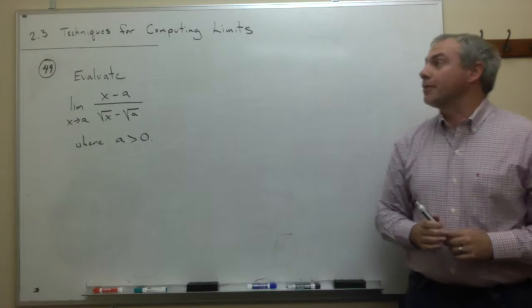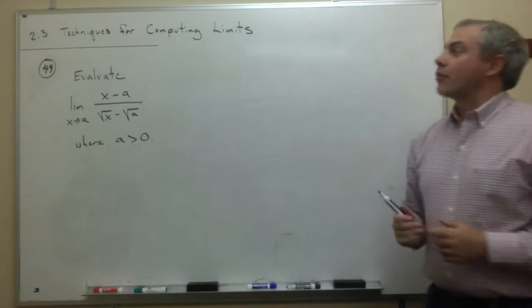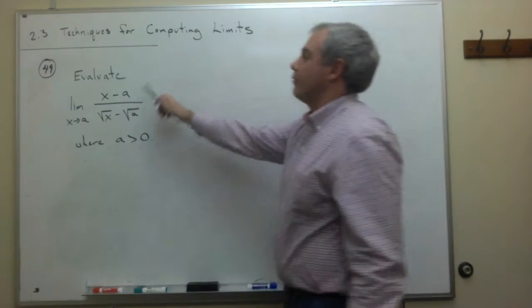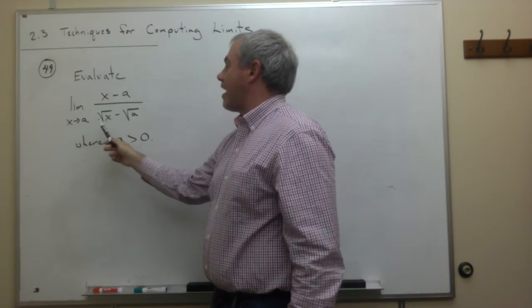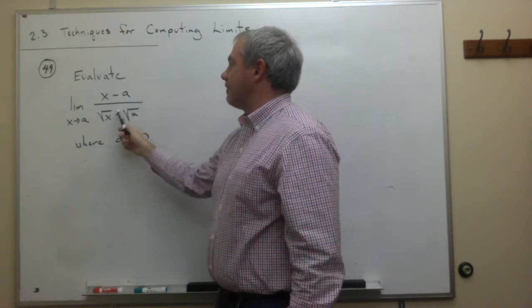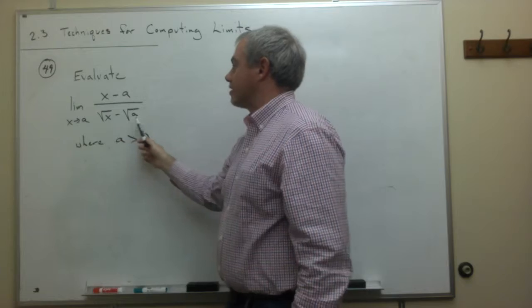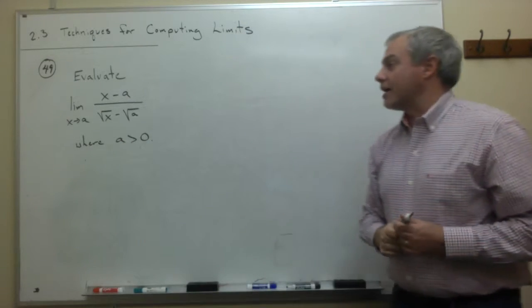Now, let's take a look at problem number 49. In problem number 49, we want to evaluate the limit as x goes to a of x minus a divided by the square root of x minus the square root of a, where a is positive.